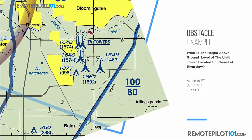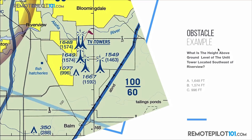What is the height above ground level of the unlit tower located southeast of Riverview? Riverview is this town up here — we can tell it's a yellow congested area, that's how we know it's a town. These charts are north up, so we know south and to the east we can find all these towers here. The question said two things very specifically, and this is why it's important to slow down and read these questions carefully because the FAA tries to trick you sometimes. It's asking for the height above ground level — that's important because we get these in MSL as well as AGL: height above mean sea level and height above the ground. And then it said of the unlit tower.